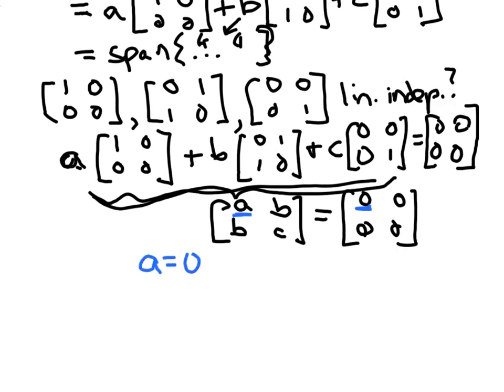I have zero here, so A must be zero. I have B here, I have zero here, so B must be zero. And I have C here, I have zero here, so C must be zero. So we've just shown that the only solution to that equation up above is the trivial solution.